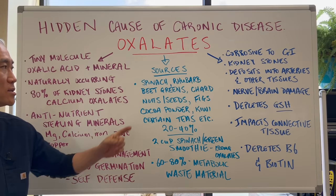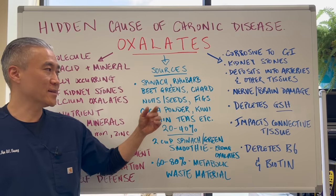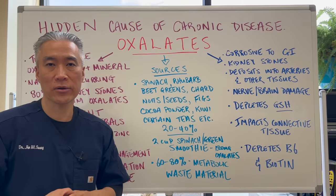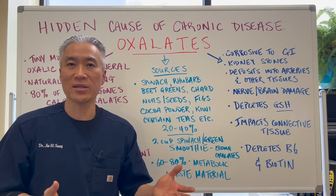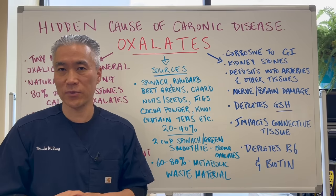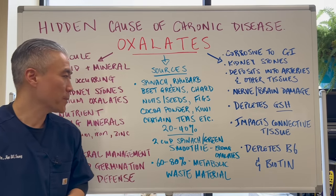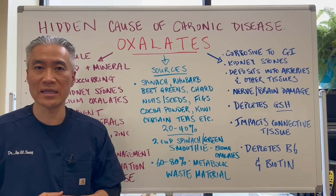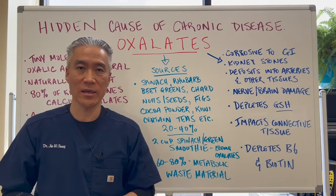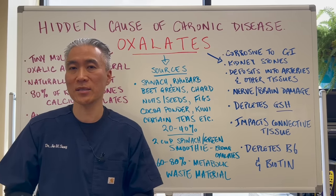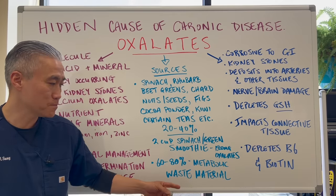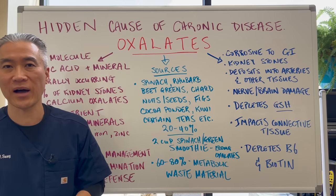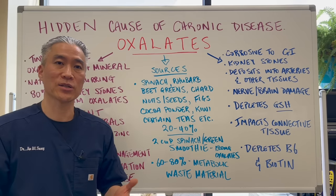So what contains oxalates? Spinach, rhubarb, beet greens, chard, nuts and seeds, figs, cocoa powder — basically chocolate — kiwi, and certain teas will all have higher levels of oxalate. There is an exhaustive list that you can look up, and I'll try to provide a link for all the different types of foods that have high oxalates in the description below. So 20 to 40% of oxalates are consumed, meaning 60 to 80% of it is metabolic waste material from our natural processes. Fun fact: two cups of spinach in your green smoothie will have 1500 milligrams of oxalates, which is a lot that your body needs to process and get out of our system.